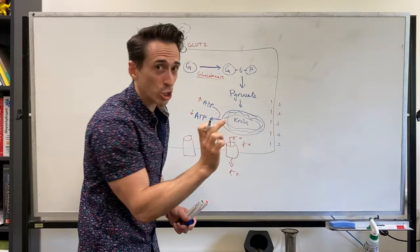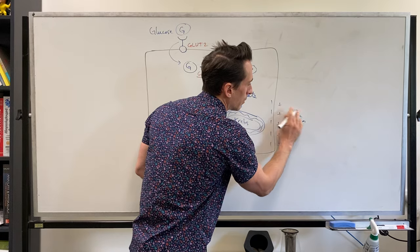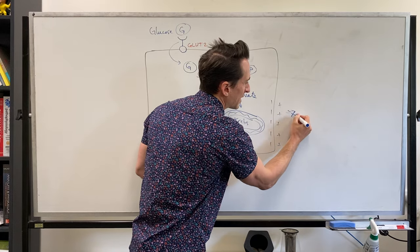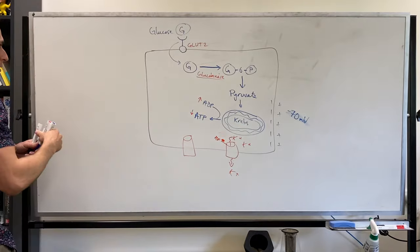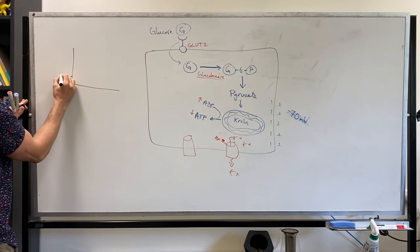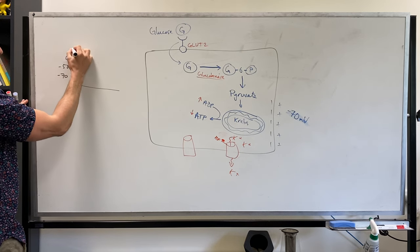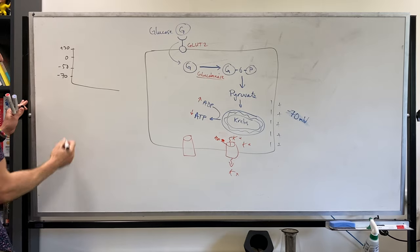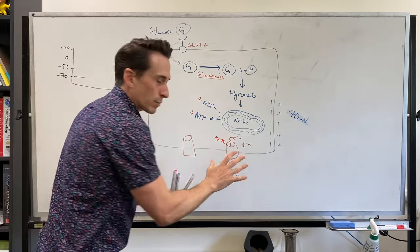So the inside becomes negative compared to the outside because all that positive potassium is leaving the cell. Now if you were to compare the charge difference from inside to outside you'll find it's going to be around about negative 70 millivolts. Let's just quickly draw this up in a chart on a graph. Let's say we've got negative 70 here, we've got negative 50 here, we've got zero here and let's say we've got positive 30 here. Right now we're at negative 70.